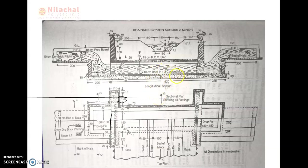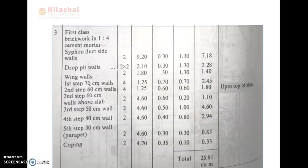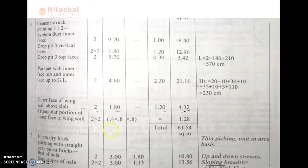The drainage section is deducted: for 2 sides, 2 triangles are provided, and for 4 sides, 4 numbers of triangles are provided. For 1 wing valve, it consists of 2 sides of nada. The opposite side also consists of 2 numbers of nada, so total is 4 numbers — 2 into 2. The size of the triangular portion of the face of the wing valve is half into 0.8 into 0.8.